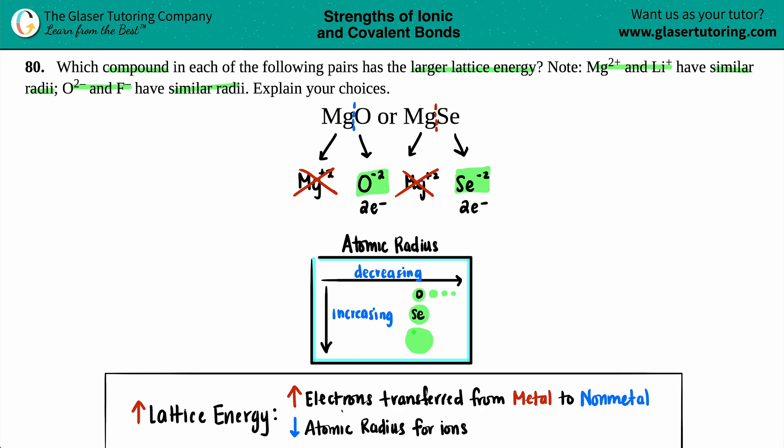The smaller the radius, the larger the lattice energy, because the smaller you are, the closer you are to your atom. In this case, oxygen is smaller, selenium is larger.